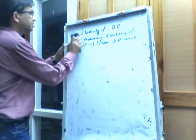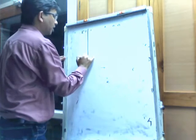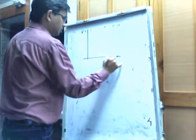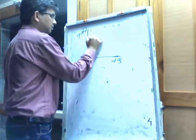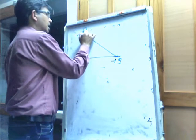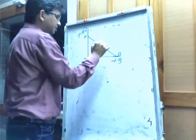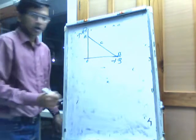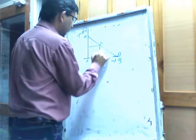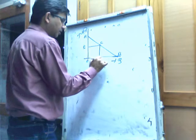Let us consider one demand curve. In the horizontal axis we are measuring quantity and in the vertical axis we are measuring price. AB is the demand curve, and we want to measure the price elasticity of demand at point C. At point C we find that price is OP0 and quantity demanded is OQ0.